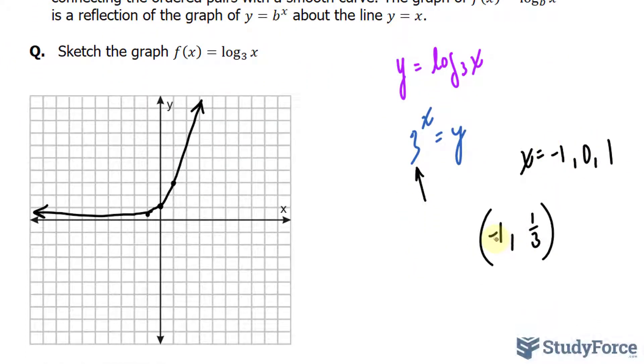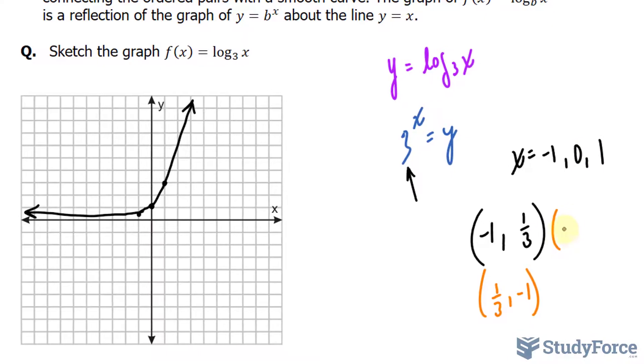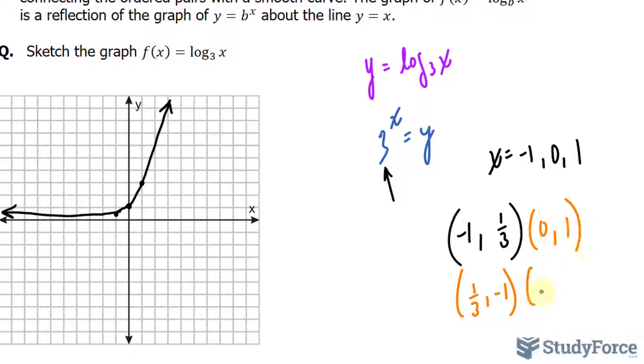So we had a point at (-1, 1/3). This point becomes (1/3, -1). That point was (0, 1), it becomes (1, 0), and that point was (1, 3), and now becomes (3, 1). So these points will serve as the points of our log function.